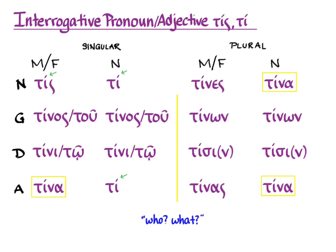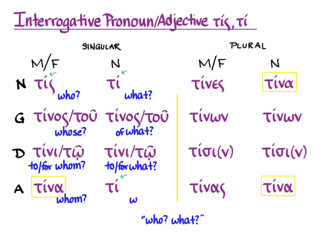Let's look at how to translate these when they are pronouns. In the nominative, tis in the masculine or feminine means 'who.' In the genitive, it means 'whose.' In the dative, it means 'to or for whom.' In the accusative, it means 'whom.' Greek expresses the role of a pronoun through case, and you can see a little of this English case distinction in who, whose, and whom. In the neuter, we say 'what,' 'of what,' 'to or for what,' and 'what.'